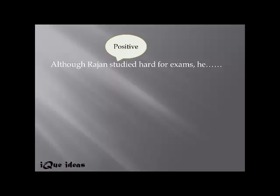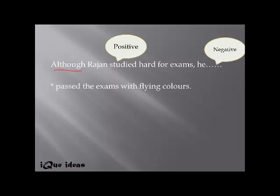Now let's take another example: 'Although Rajan studied hard for exams, he ___.' Here 'Rajan studied hard' expresses a positive meaning, but 'although' is a conjunction of contradiction — so the second part should be negative. Given two options — 'passed the exams with flying colors' (positive) or 'passed the exams poorly' (negative) — the negative option fits, because 'although' demands a contrasting idea.